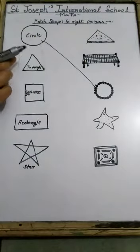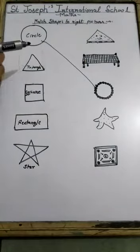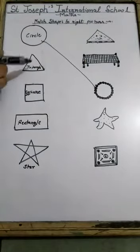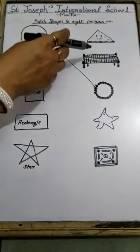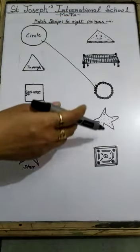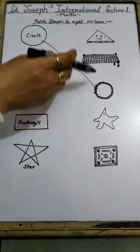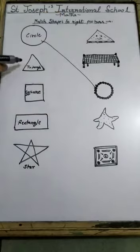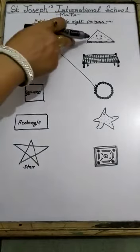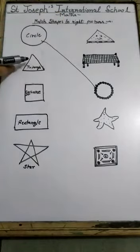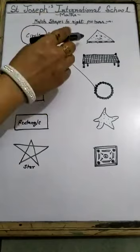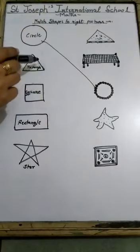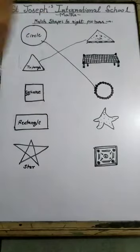Now next, this is triangle. Now see, which figure has triangle shape? See this — this is sandwich. Sandwich has triangle shape? Yes, sandwich has triangle shape. So match triangle to the sandwich.